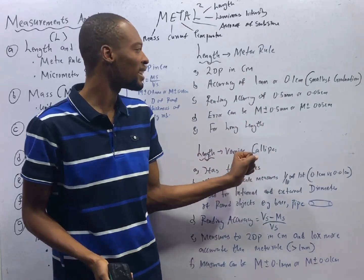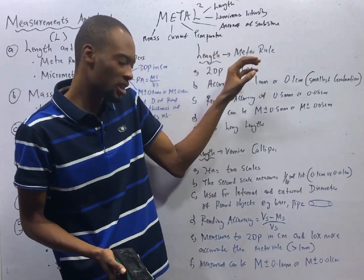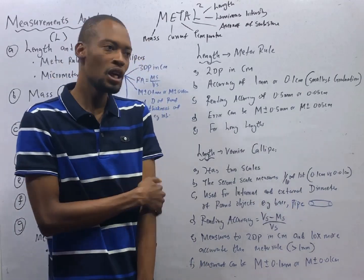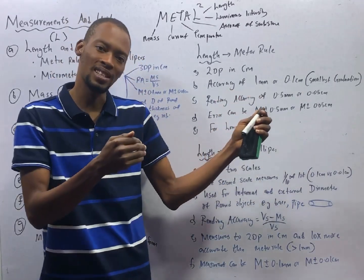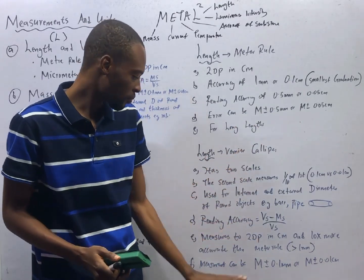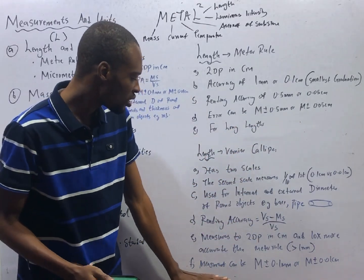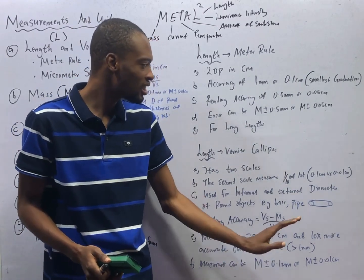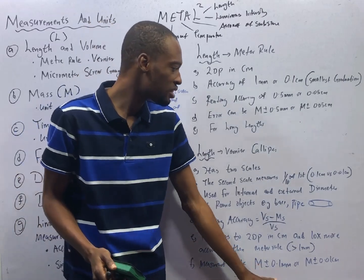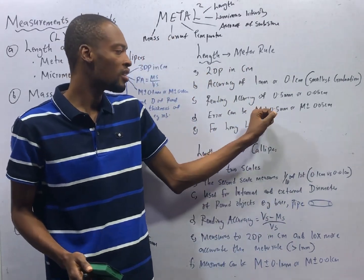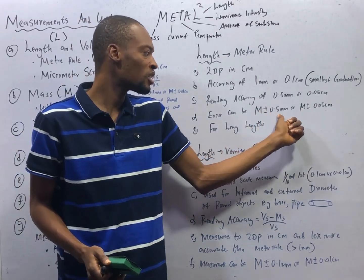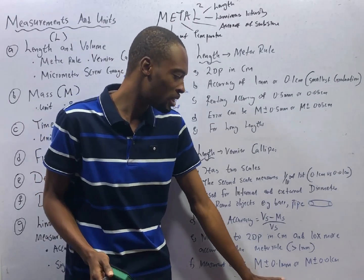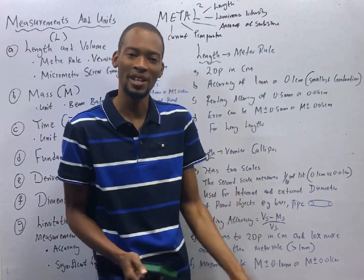The similarity between meter rule and caliper is that both measure to two decimal places in centimeter. But while the meter rule has only one scale, the vernier caliper has two scales. The accuracy of a vernier caliper is the measurement plus or minus 0.1 millimeter, which is far more accurate than the meter rule which gives the measurement plus or minus 0.5 millimeter.